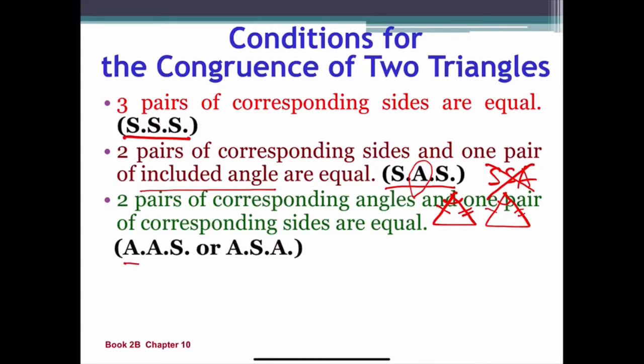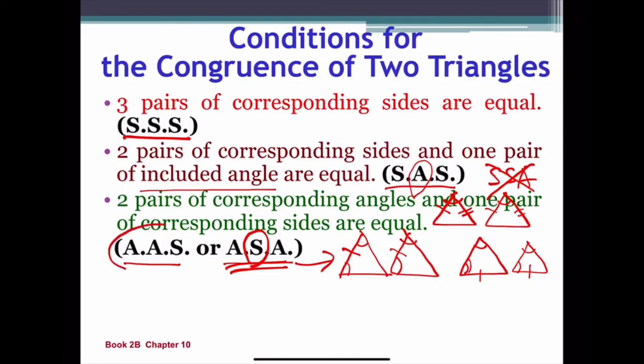Third, ASA and AAS. For this, we will have two pairs of angles. So if this is the included side, we will use the reason ASA. And if the two angles are together, we will use AAS.